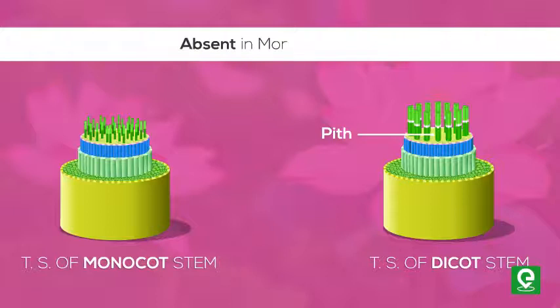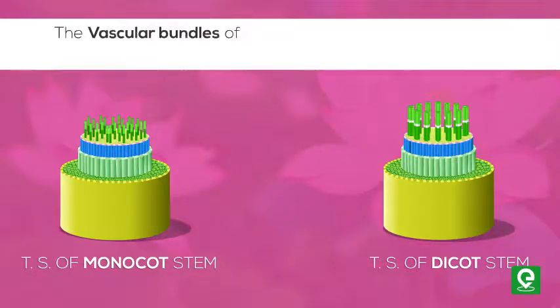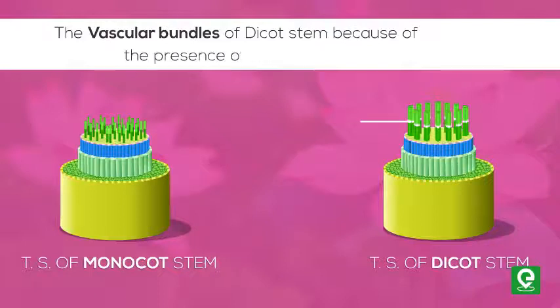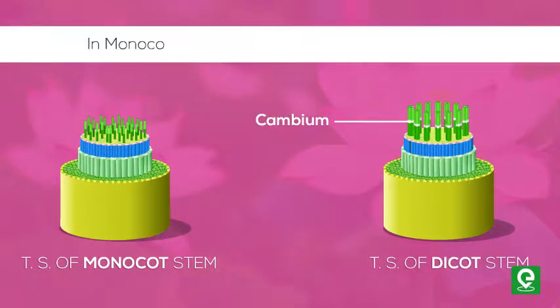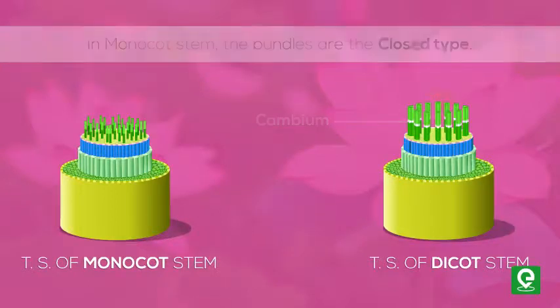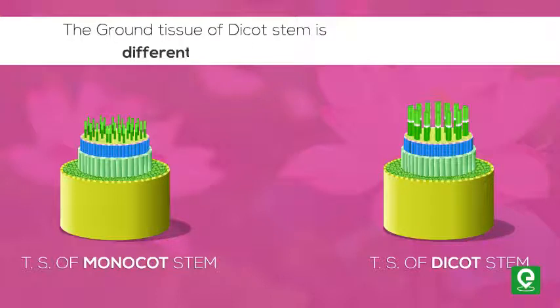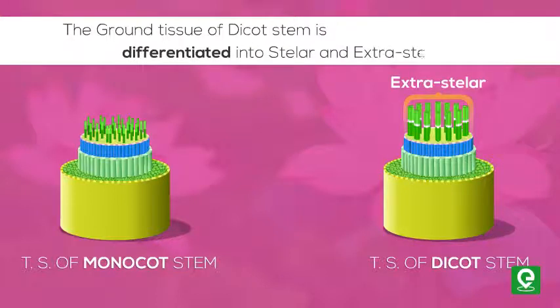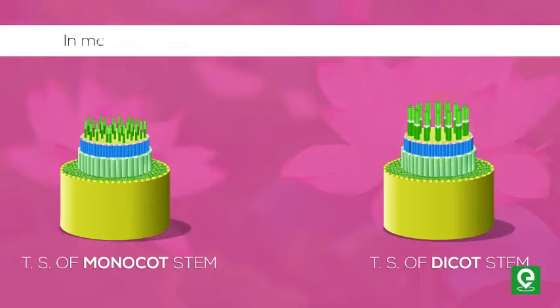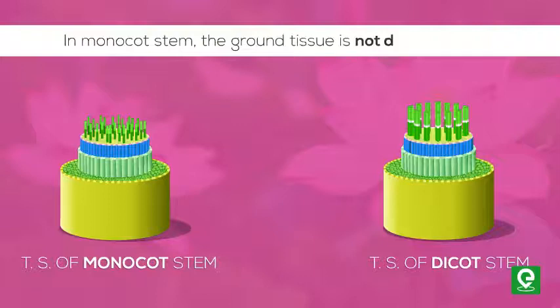The pith is large in dicot stems while absent in monocot stems. The vascular bundles of dicot stem, because of the presence of cambium, are of the open type, while in monocot stem the bundles are of the closed type. The ground tissue of dicot stem is differentiated into stellar and extra-stellar tissues, whereas in monocot stem the ground tissue is not differentiated.